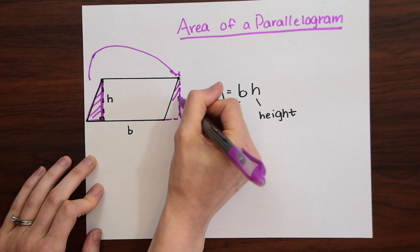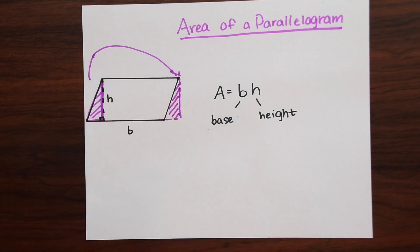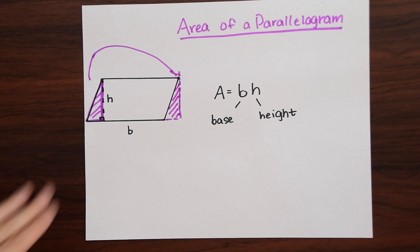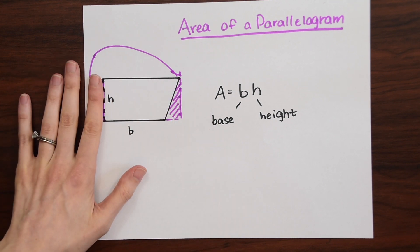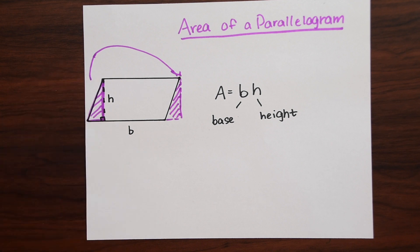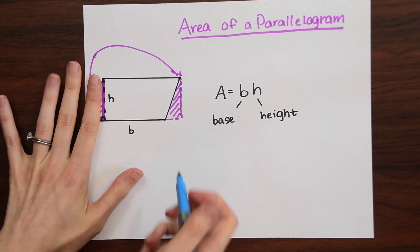You could see that this now creates a new shape. This creates a rectangle. So if we cut this off and place it over here notice that we actually get a rectangle. So we actually get a rectangle.